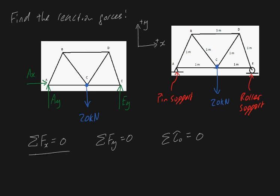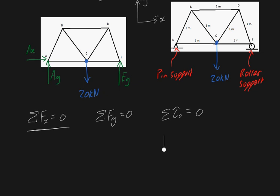Let's fill in these formulas. The sum of forces in the x-direction equals zero. We've defined x as positive to the right. The only force acting in the x-direction is A subscript X, acting positively to the right. There are no forces acting to the left, so A subscript X minus zero equals zero.